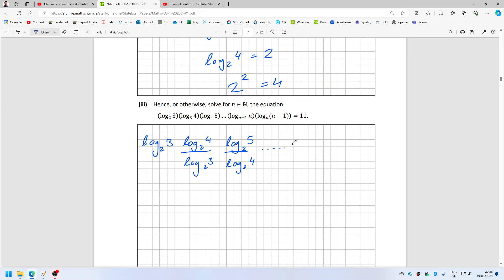Again, change into base 2: log₂(n+1) over log₂n equals 11. So they cancel diagonally.